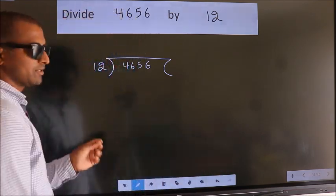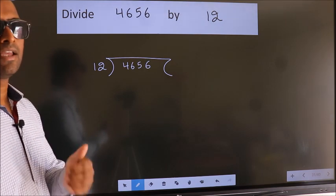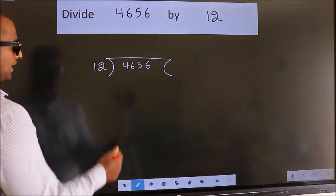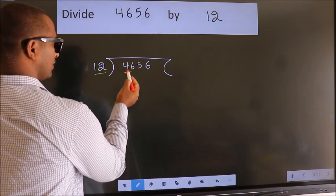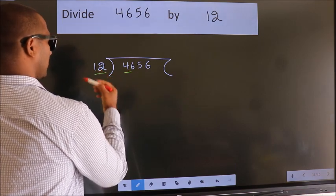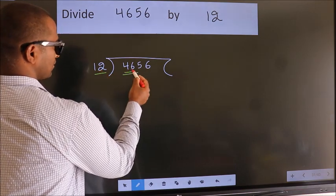This is your step 1. Next. Here we have 4, here 12. 4 is smaller than 12. So we should take 2 numbers, 46.